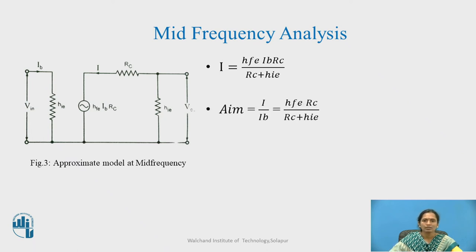I can say AIM that is mid frequency current gain equal to I upon IB that is output current by input current. I will get this particular equation since I upon IB will be giving you this remaining ratio. Now, to calculate Vout, I can say it is simply the current flowing through the path into HIE. I will just multiply the value of I with this HIE.